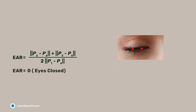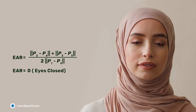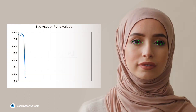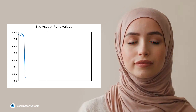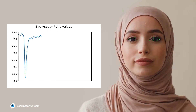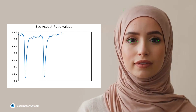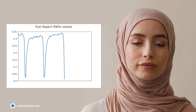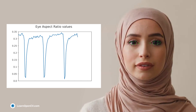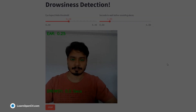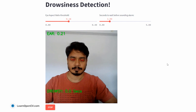For drowsiness detection, we only have to determine whether the eyes are closed or not. Our solution will track the EAR value across multiple consecutive frames. If the eyes have been closed for longer than some predetermined duration, we will set off the alarm. We have deployed the application as a Streamlit web app that you can check out in the description box.